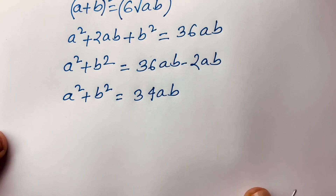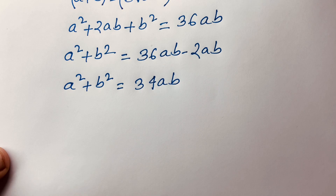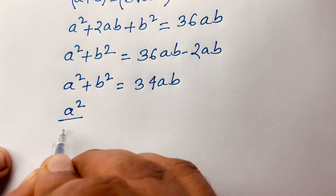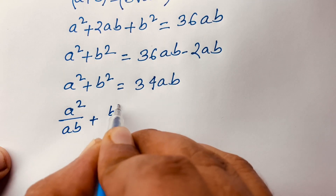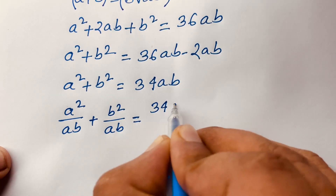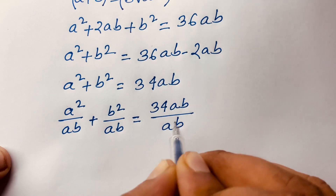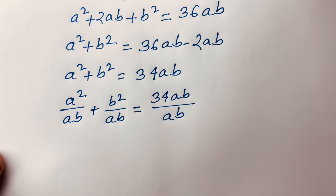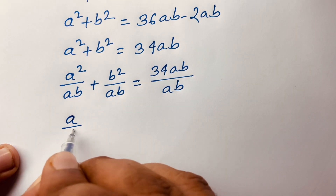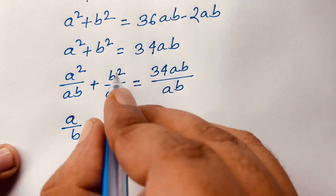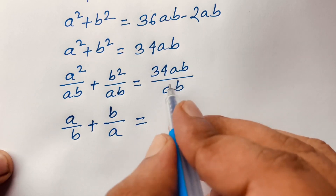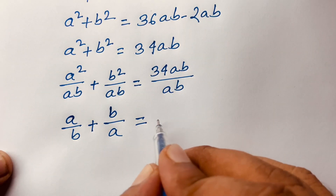I divide both sides by AB. So I can see easily A square divided by AB plus B square divided by AB is equal to 34AB divided by AB. Then A square divided by AB gives A over B, and B square divided by AB gives B over A, which is equal to 34.